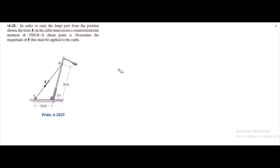In this video, we will solve problem 4-25 from R.C. Hibbeler and Hibbeler Statics 12th edition. According to this problem, we have given a counterclockwise moment of 1500 lb·ft about point A, and we have to determine the magnitude of force F which has produced that amount of moment.